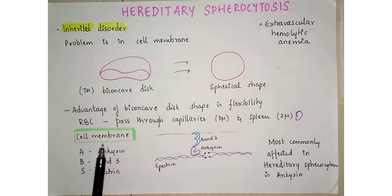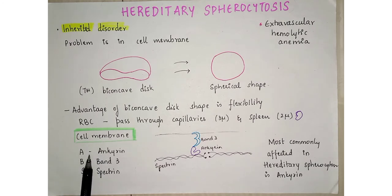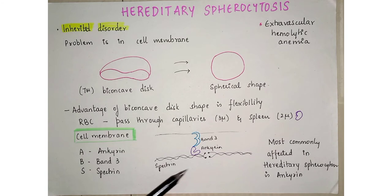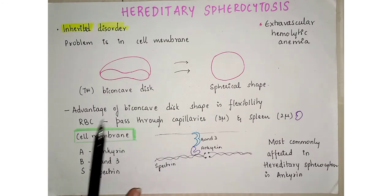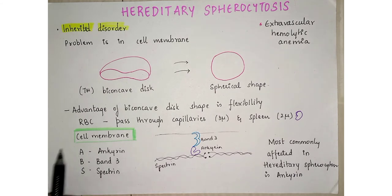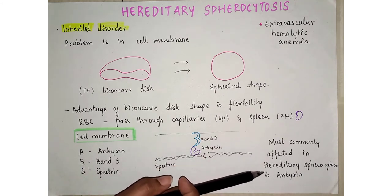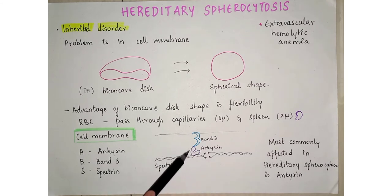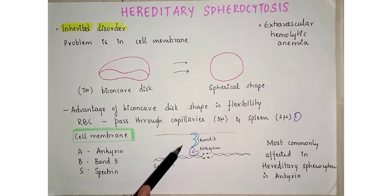In a normal RBC cell membrane, there are several important proteins: ankyrin, band 3 protein, and spectrin — 'ABS' is a useful mnemonic to remember them. These bands of proteins such as spectrin and ankyrin with band 3 form the cell membrane structure of the RBC. The most commonly affected protein in hereditary spherocytosis is ankyrin.